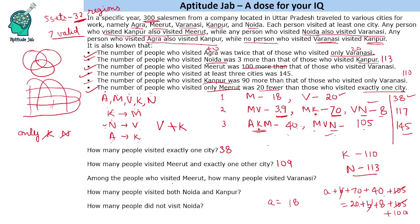Among the people who visited Meerut, how many visited Varanasi? Meerut-Varanasi is 18, and Meerut-Varanasi-Noida is 105, giving 18 plus 105 which is 123 — wait, the instructor says 39 plus 105 equals 144. So Meerut visitors who also visited Varanasi: 39 + 105 = 144.